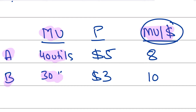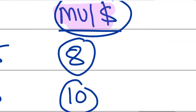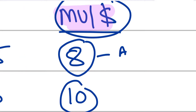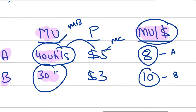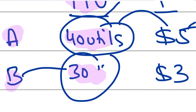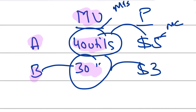When I divide marginal utility by price, I get 8 utils per dollar for good A and 10 utils per dollar for good B. The situation is completely reversed. If I had one dollar to spend, I should now buy good B instead of good A, because good B gives a higher utility per dollar. The 40 utils for good A was gained by paying 5 dollars, while the 30 utils for good B was gained by paying only 3 dollars.